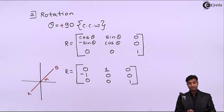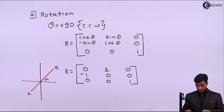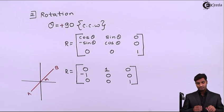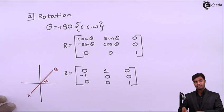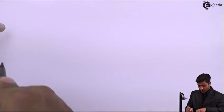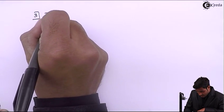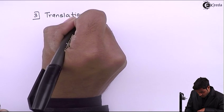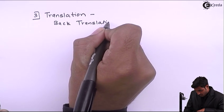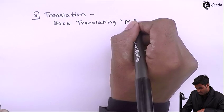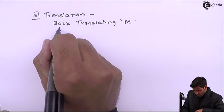After rotating, the figure looks like this — the line has been rotated. Since the midpoint was at an arbitrary position, we now have to place it back to its original position. For that we require back translation — the third step is translation, back translating M to its original position.